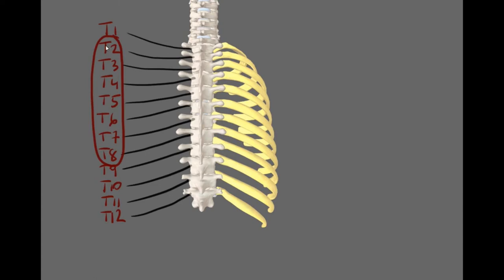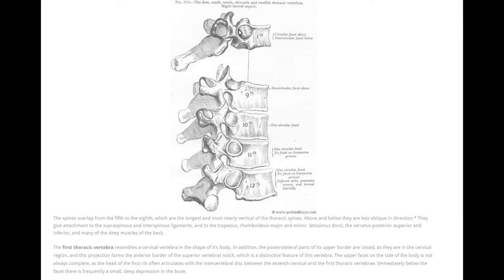There are a total of 12 thoracic vertebrae in the vertebral column. T2 through T8 are considered typical thoracic vertebrae and the rest are considered atypical thoracic vertebrae: T1, T9, T10, T11 and T12.